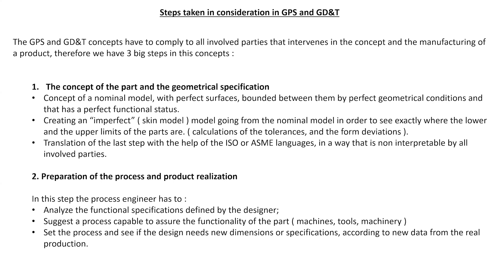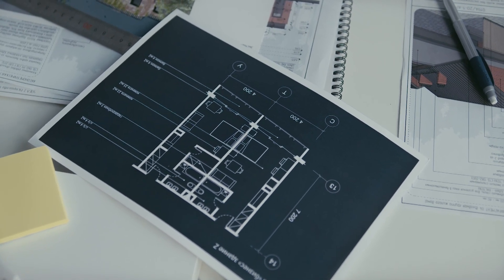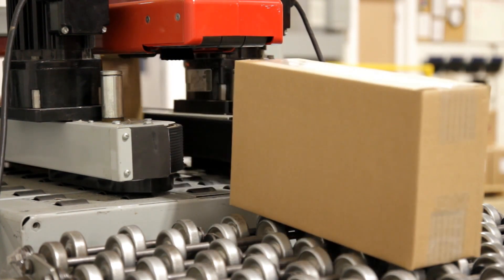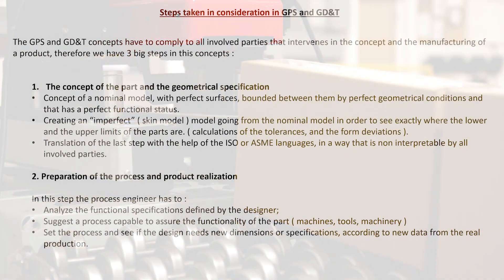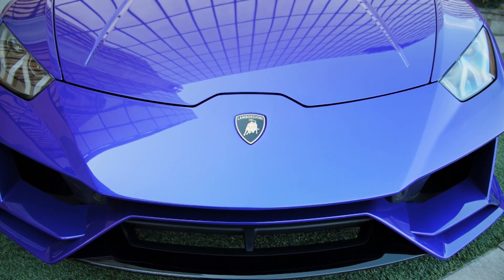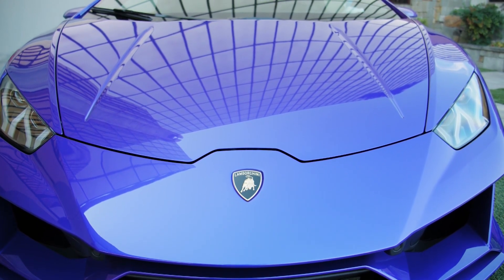Okay, so step number two, the preparation of the process and product realization. In this step the process engineer analyzes the functional specifications defined by the designer, suggests a process capable to assure the functionality of the part. So he is going to say what machines are going to be needed, what tools, what machinery is going to be needed and so on. Set the process. He is going to set the process and see if the design needs new dimensions or specifications according to the new data from the real production.